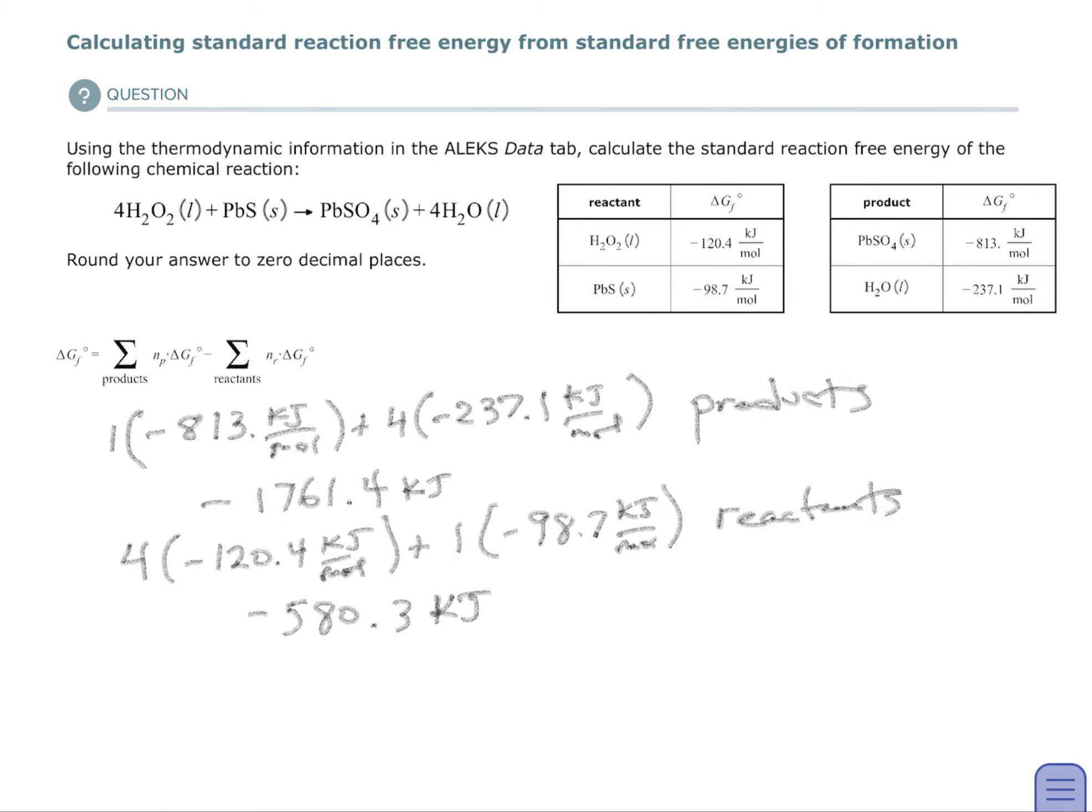And then here's my second one. This is my reactants. I have four moles of the peroxide and one mole of the lead sulfide, and I add those together.